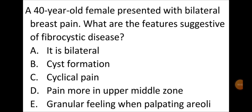Let's look at a multiple choice question. A 40-year-old female presented with bilateral breast pain. What are the features suggestive of fibrocystic disease? Statement A: it is bilateral — this is true, fibrocystic disease can occur bilaterally but also unilaterally. Statement B: cyst formation — also true, cyst formation is part of the pathophysiology. Statement C: cyclical pain — also true, the patient may have either cyclical or constant pain.